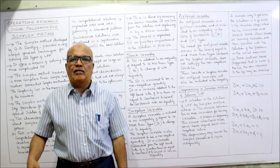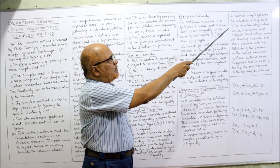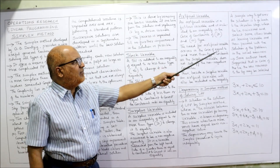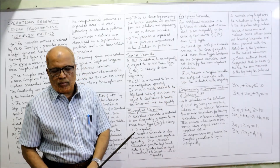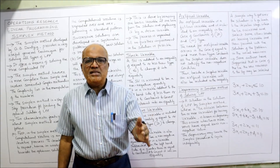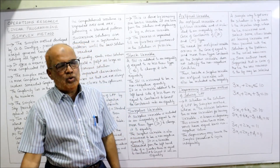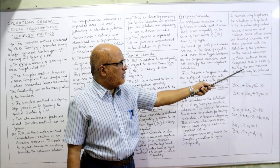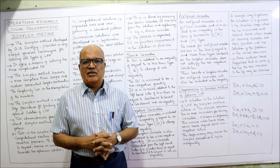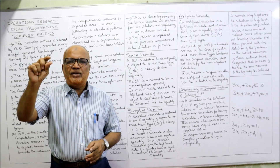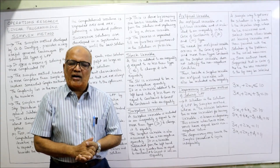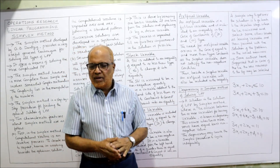To remove degeneracy, go back to the iteration stage where the tie occurred and select some other variable as the leaving variable, then proceed with the solution in the usual manner. Some authors suggest that when a tie occurs, the row nearest to the top may be selected as the leaving variable. This is a technique to resolve degeneracy. This is also a theoretical concept that may appear in examinations.